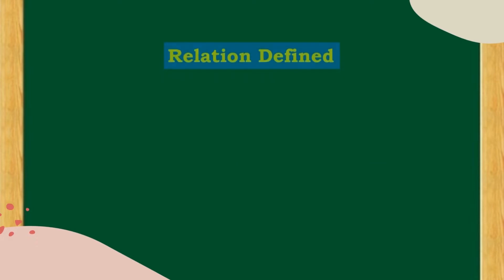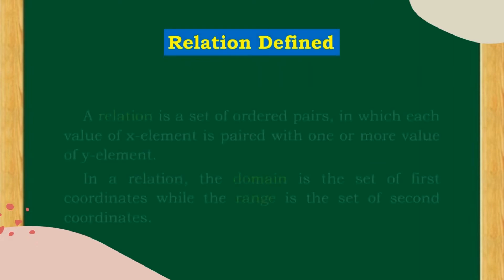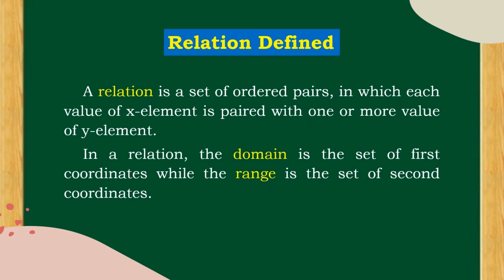Relation defined: A relation is a set of ordered pairs in which each value of x element is paired with one or more value of y element. In a relation, the domain is the set of first coordinates while the range is the set of second coordinates.